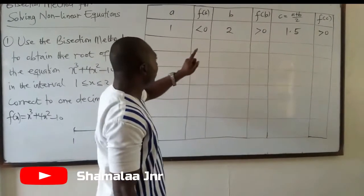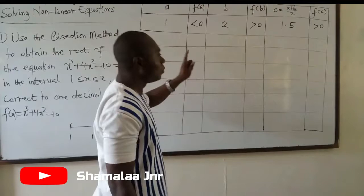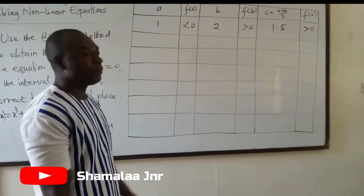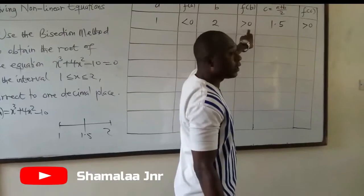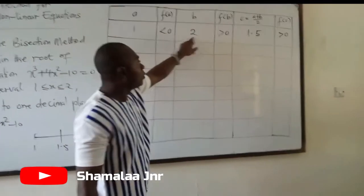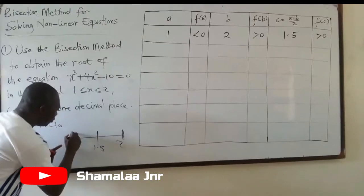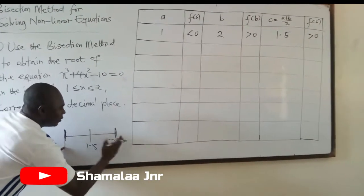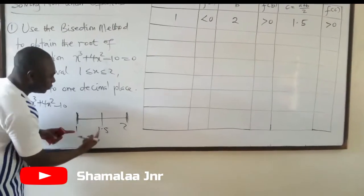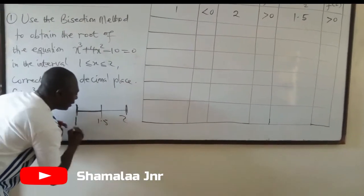You replace the one whose functional value is similar to that of 1.5. The functional value of 1 is less than 0, and 1.5 is greater than 0. So 1.5 will come and replace 2, because both have functional values greater than 0. This tells us that the answer could be found between 1 and 1.5, giving us a narrower interval.